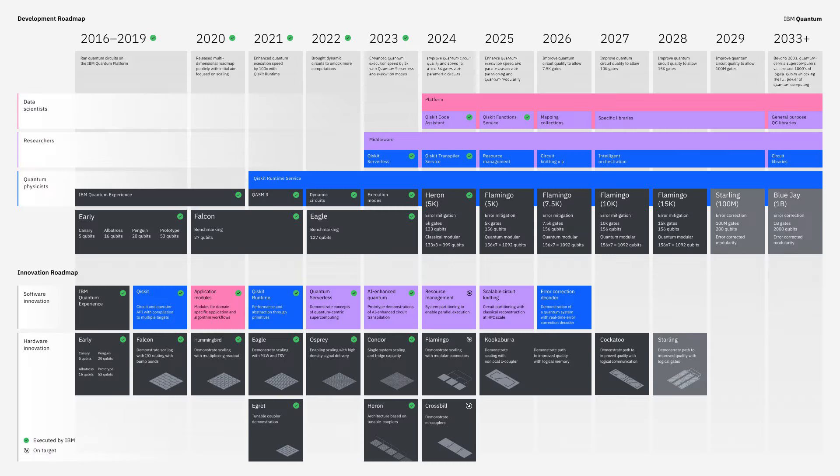Here's where we stand on our development roadmap: we've checked off everything, including Qiskit functions a little earlier than planned. The other part of our roadmap is to show where we're going and the innovations we're doing. I'd like to hand it over to Jerry to talk through the hardware innovations.